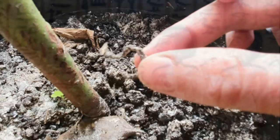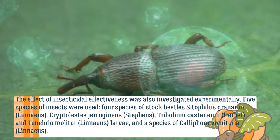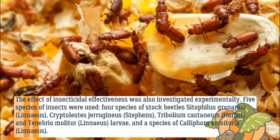Archaeological records from Egypt describe the use of ash against fleas and lice on the population. Subsistence farmers in northern Cameroon use ashes to protect stored crops. The insecticidal effectiveness was also investigated experimentally using five species of insects: Sitophilus granarius, Cryptolestes ferrugineus, Tribolium castaneum, Tenebrio molitor larvae, and Calliphora vomitoria.